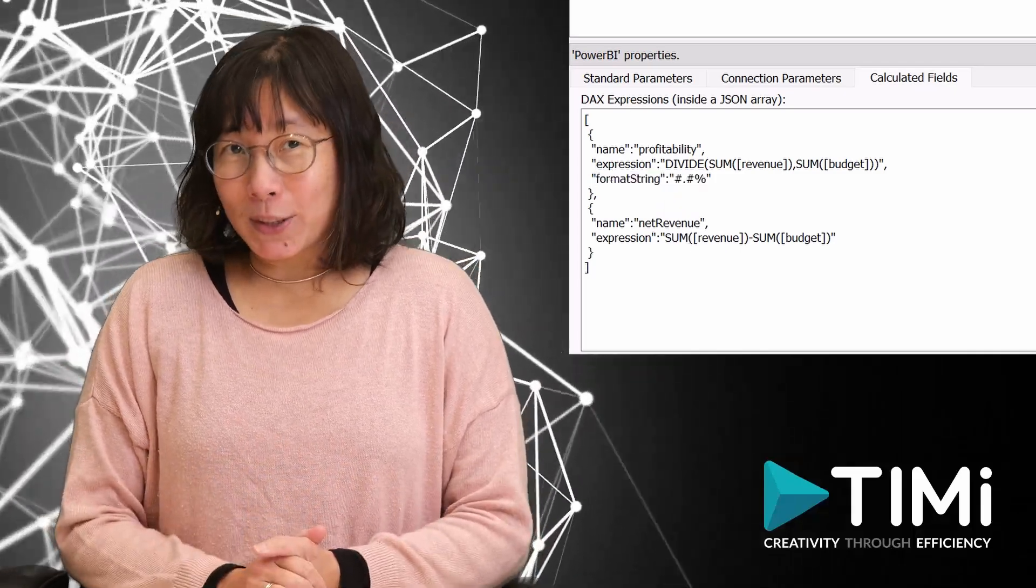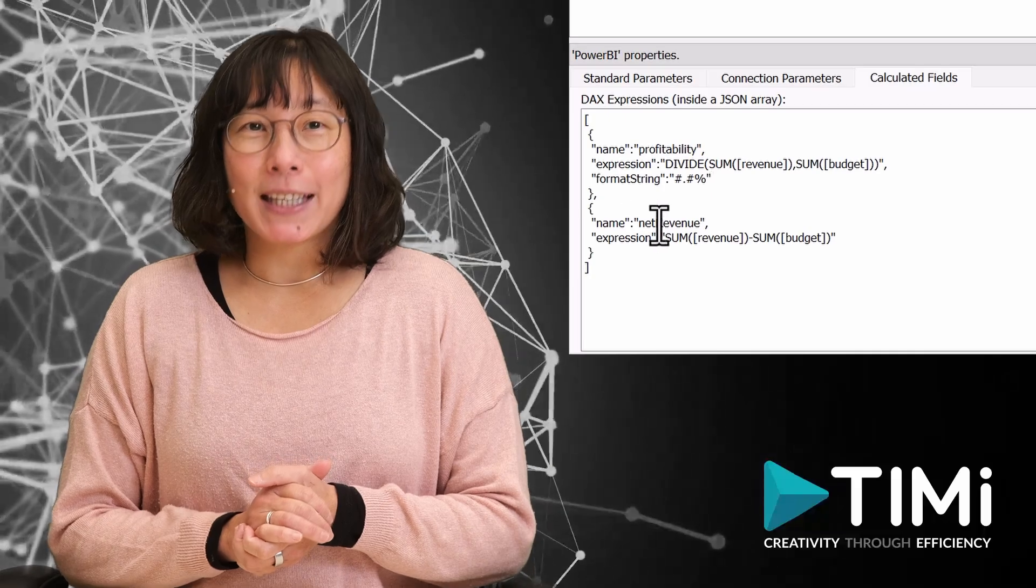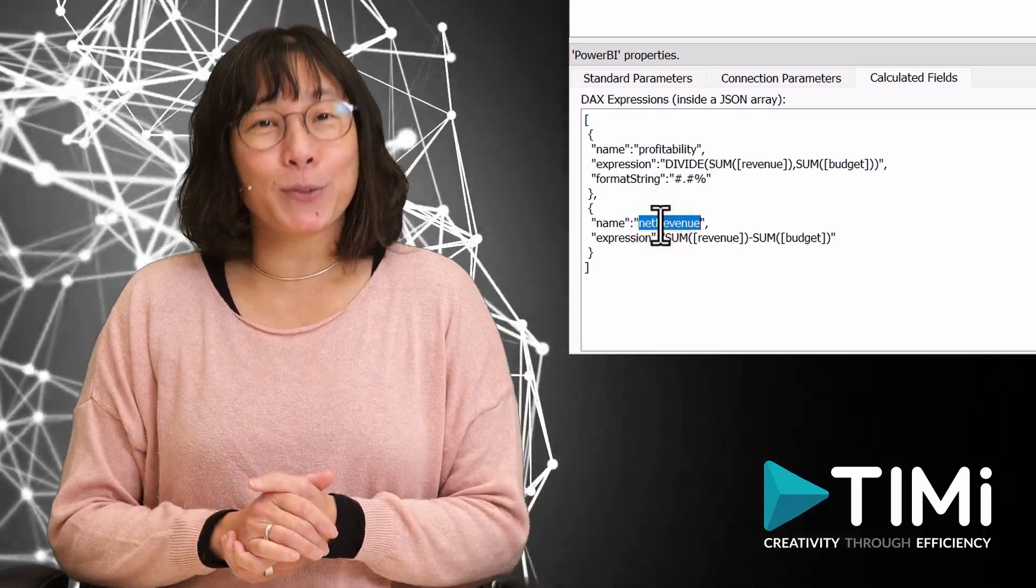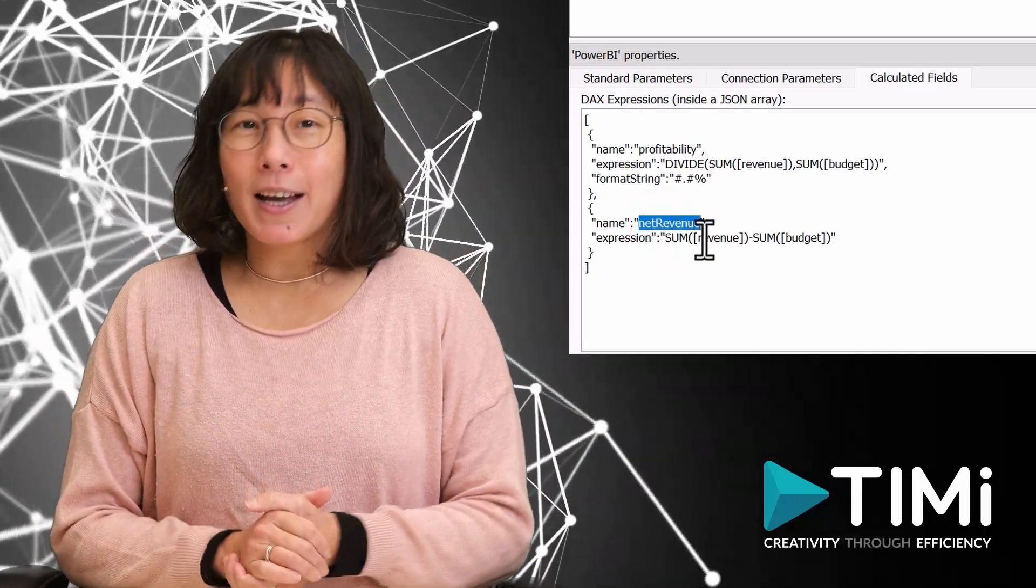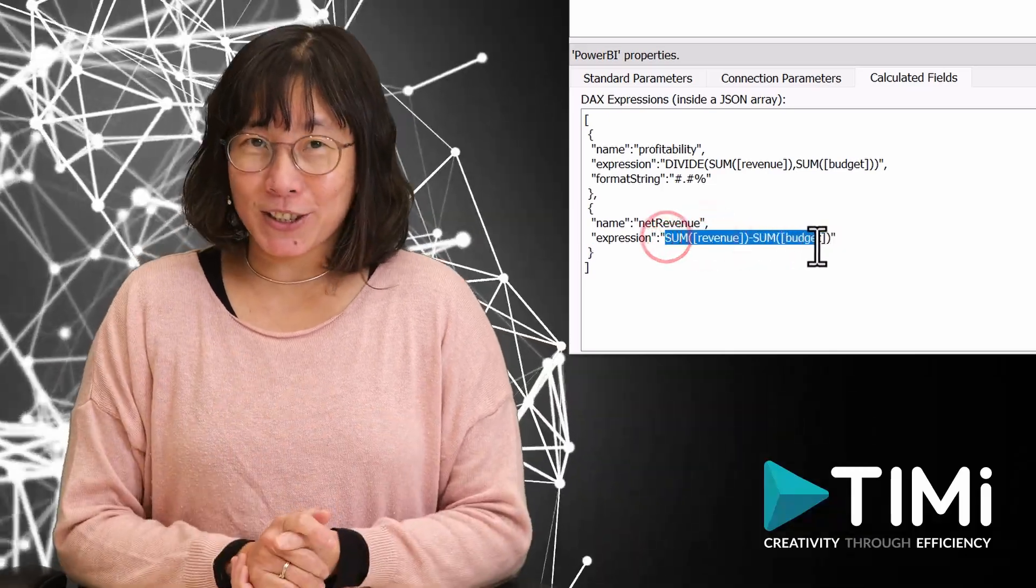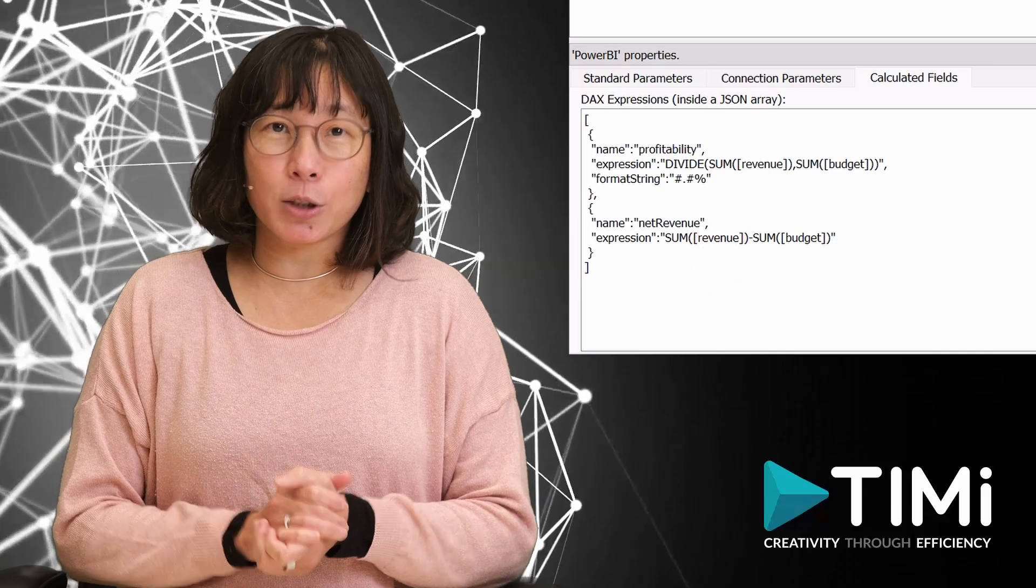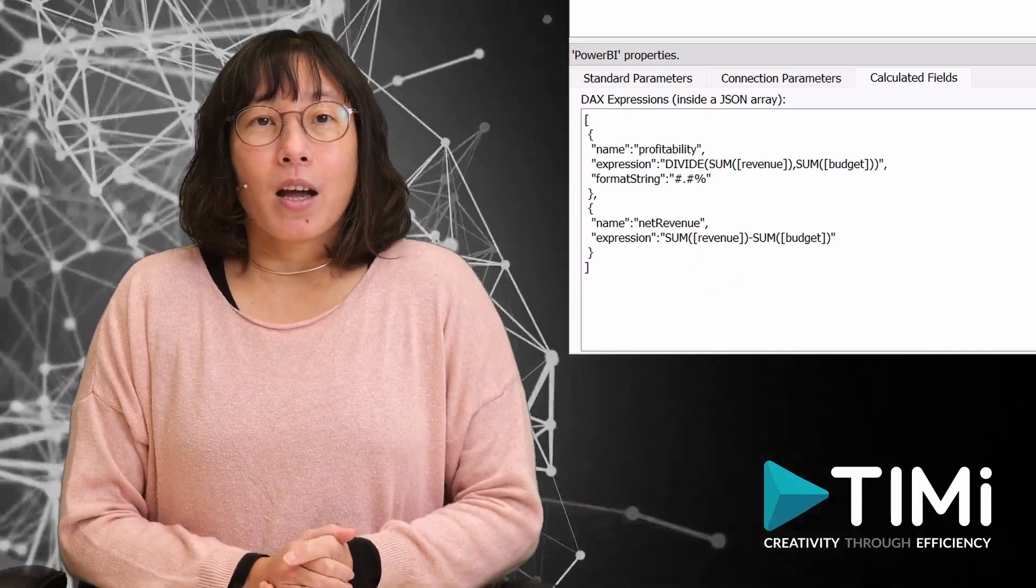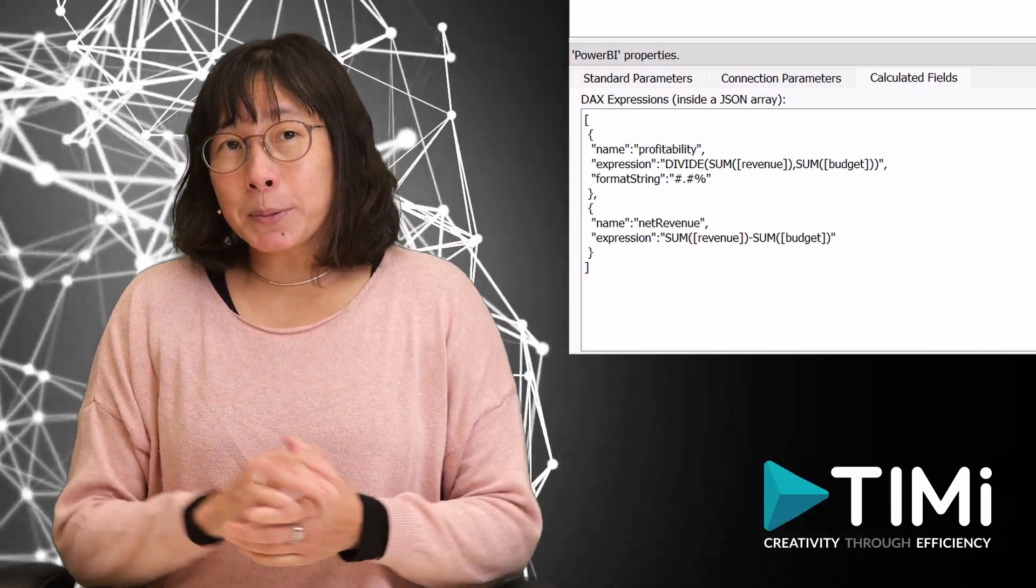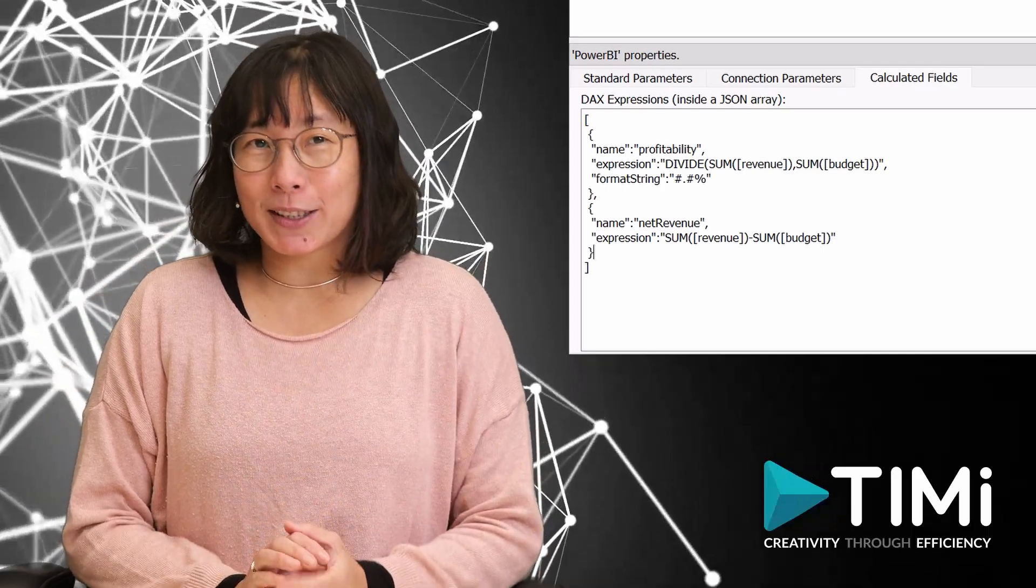Our second calculated field is named net revenue. It is just the revenue of all the movies minus their budgets. Again, there is a sum operation here because we will ask Power BI to aggregate the results per year.